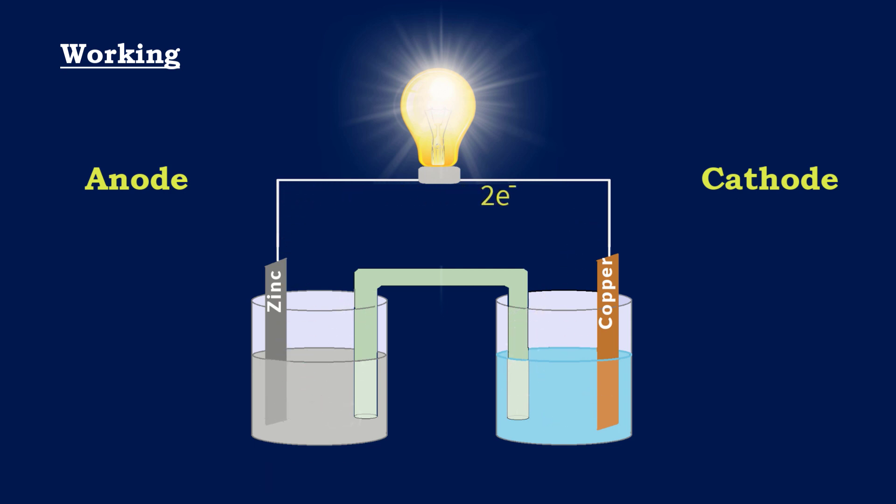These electrons start moving from anode to cathode and reach the cathode side. At the cathode, these two electrons are absorbed and copper ions reduce to copper metal. In this way, electrical energy is produced.